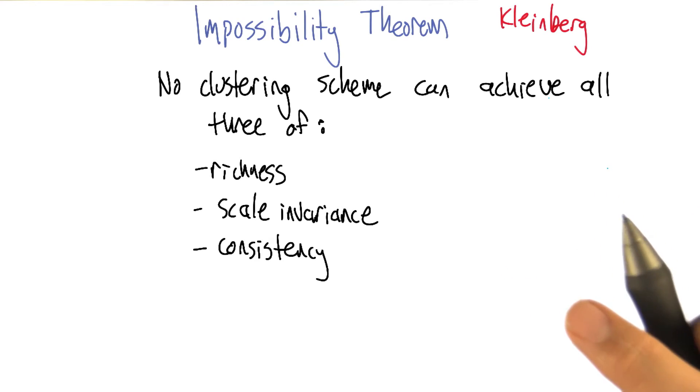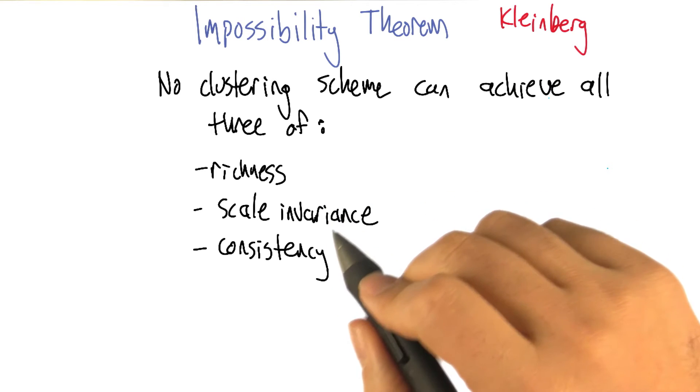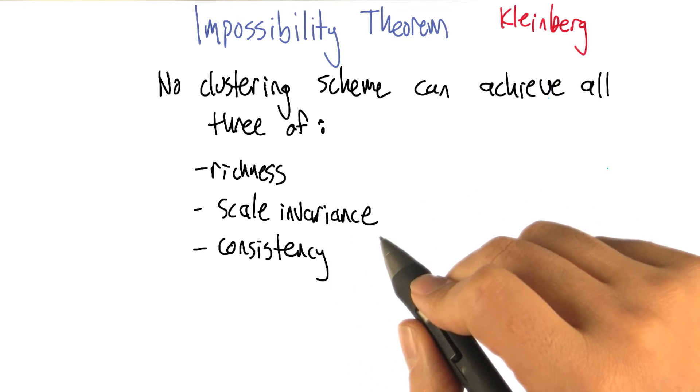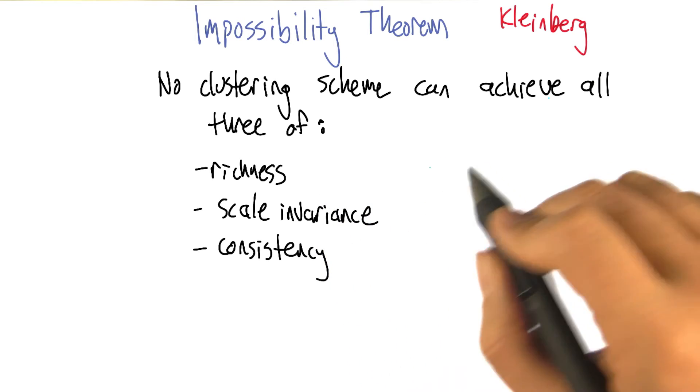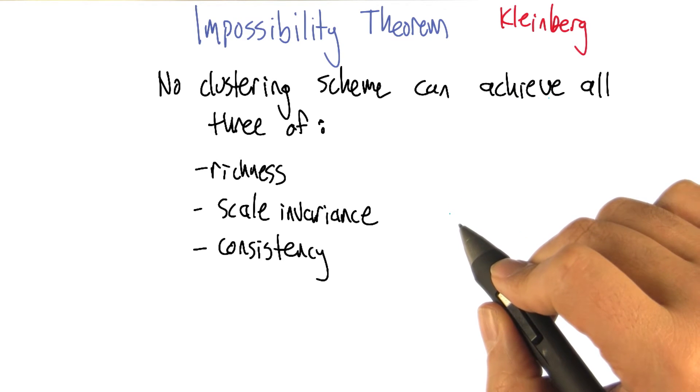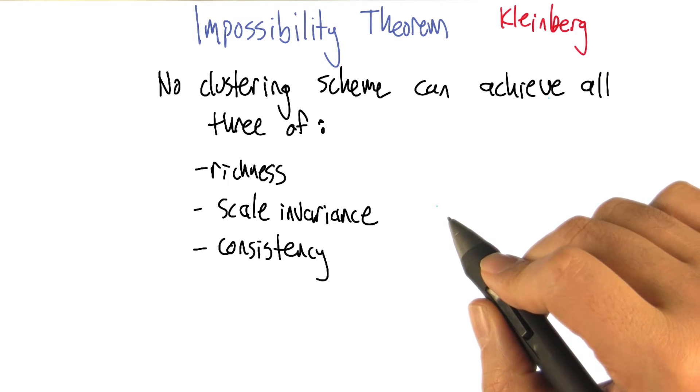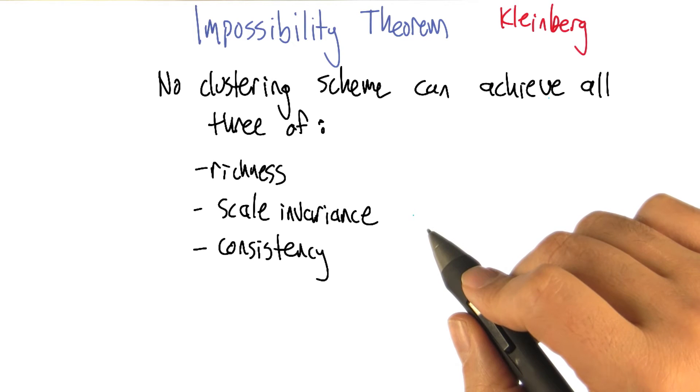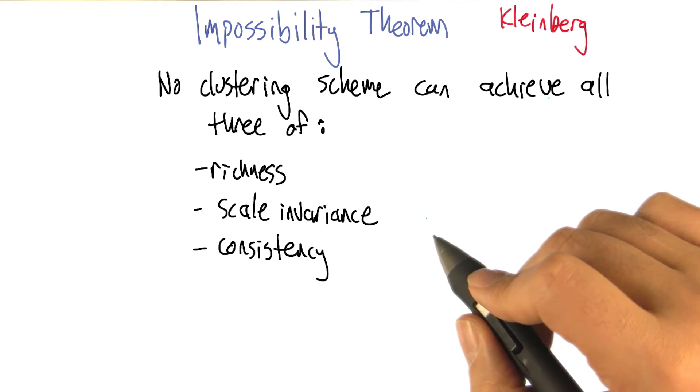This is a striking and maybe even upsetting result, right? It's saying that if you actually sit down and say, here's what I would like my clustering algorithm to be, which people hadn't really done very often. Once you've bothered to do all that hard work of saying what matters to you and what doesn't matter to you, it turns out you can't have what you want. You can't always have what you want.